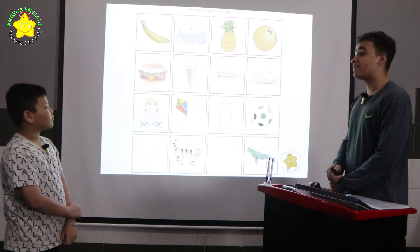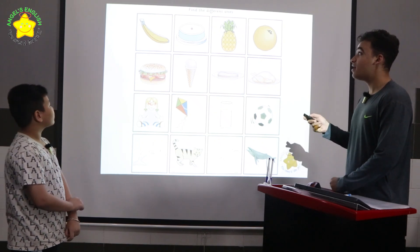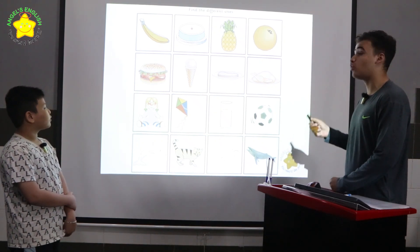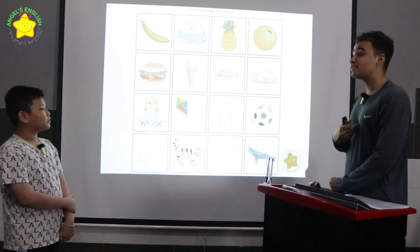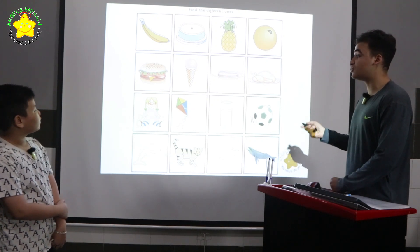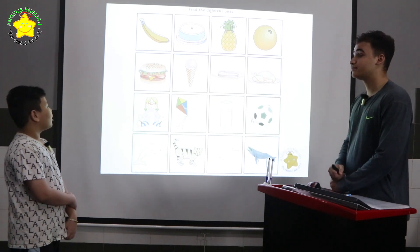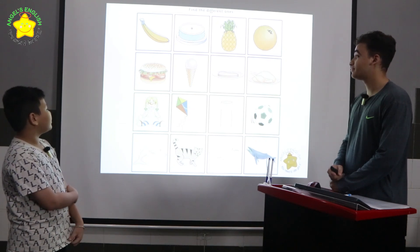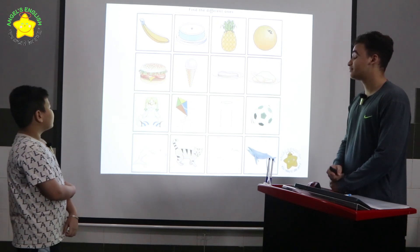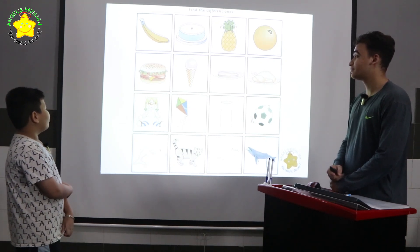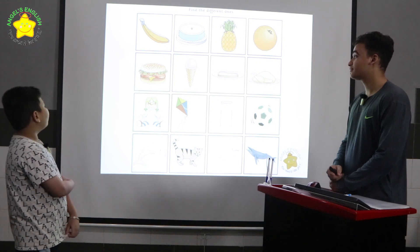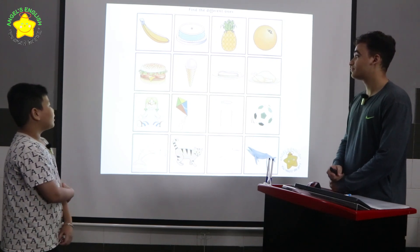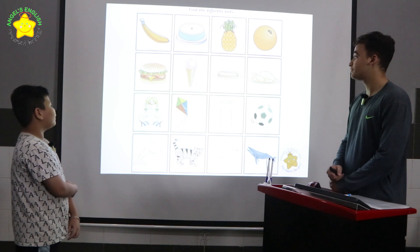This is called find the different ones. In row one, the cake is different because the banana, the pineapple, and the orange are all fruits. Can you please tell me which ones are different in rows two, three, and four? The ice cream is different because the burger, the meat, and the chicken are all food.